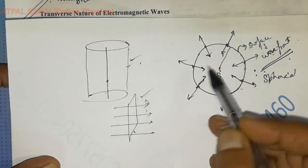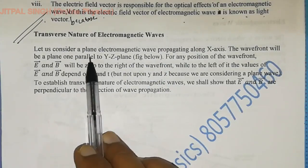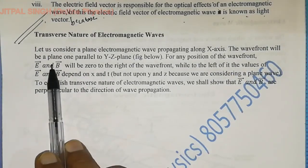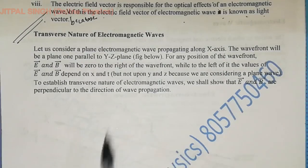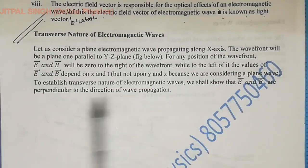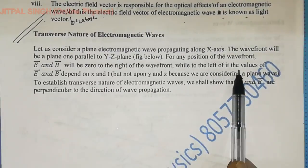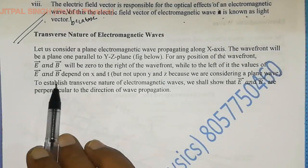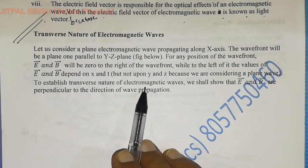Now coming back. Transverse nature of EM waves. Let us consider a plane electromagnetic wave propagating along the x-axis. The wave front will be a plane parallel to the y-z plane. For any position of the wave front, electric and magnetic field vectors will be zero to the right of the wave front, while to the left of it, the values of vector E and vector B depend on x and t, but not on y and z.